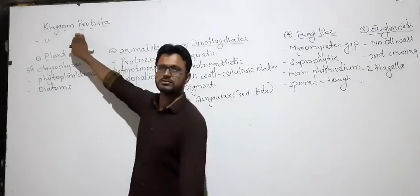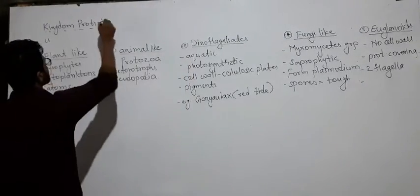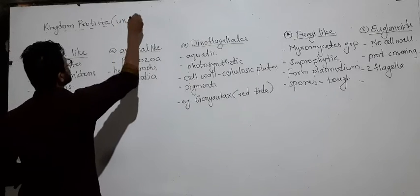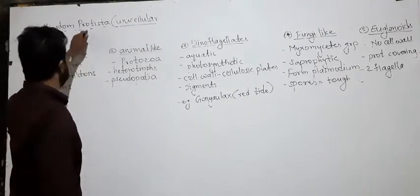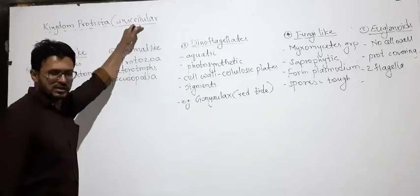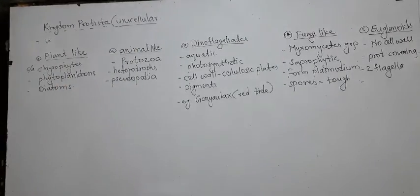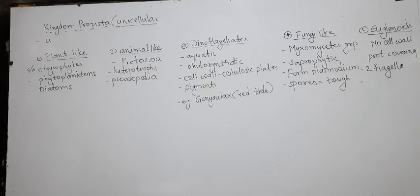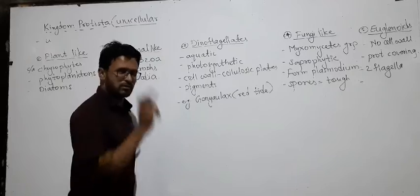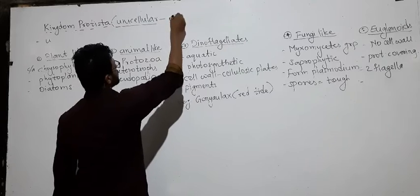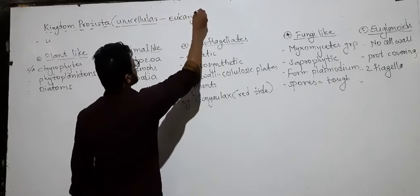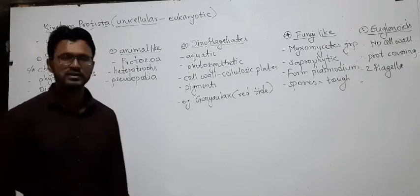It means ye saare organisms Kingdom Protista mein kaise hote hain - unicellular hote hain, single cell ke upar depend hote hain. So we can write here: all organisms which belong to Kingdom Protista they are unicellular. But there is a difference between the two - waha bhi unicellular, yaha bhi unicellular. The difference ye hai: these organisms they are eukaryotic.